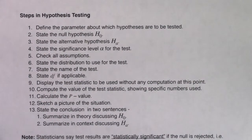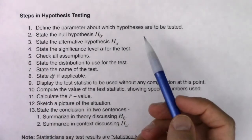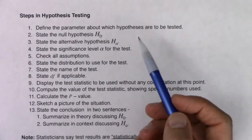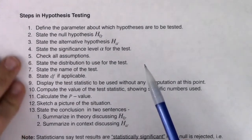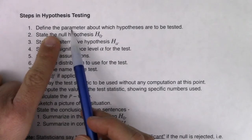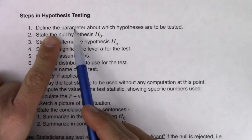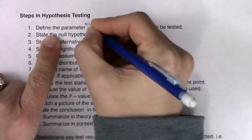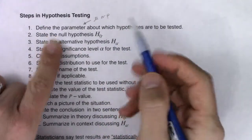Here are our 13 steps again. We've gone over these in proportion land, and we're going to do them in mean land. I want to see all 13 steps on your free response questions. Step one: define the parameter about which hypotheses are to be tested. You're going to define a p if you're in proportion land, or a mu if you're in mean land. Whatever letter you define, use it in your null and alternate.